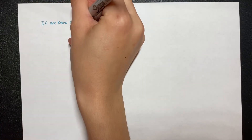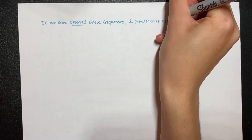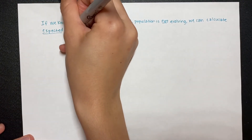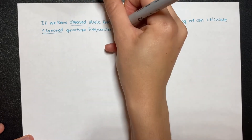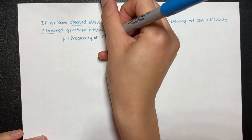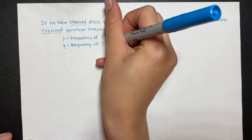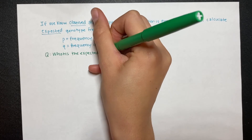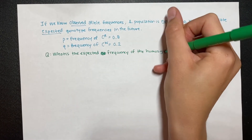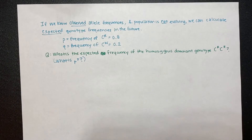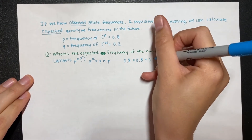If we know the observed allele frequencies and the population is not evolving — meaning it is in Hardy-Weinberg equilibrium — we can use the second equation to calculate the expected genotype frequencies for future generations. Using the same wildflower population where p = 0.8 and q = 0.2: what is the expected frequency of the homozygous dominant genotype CR-CR, or p²? p² means p times p, so 0.8 × 0.8 = 0.64.